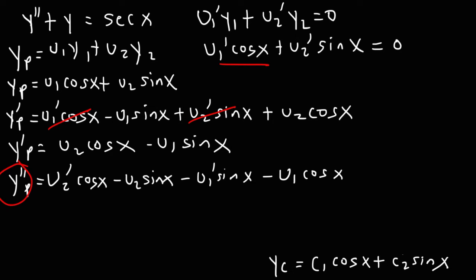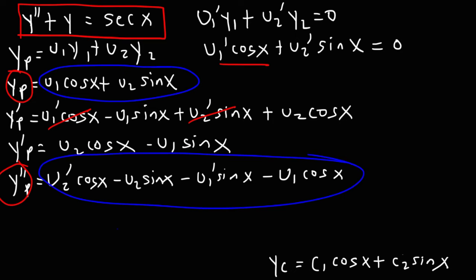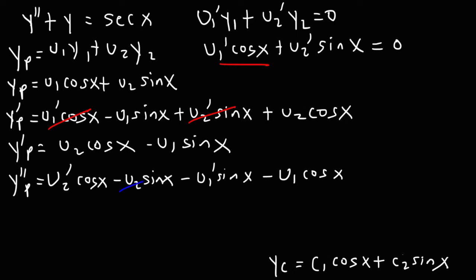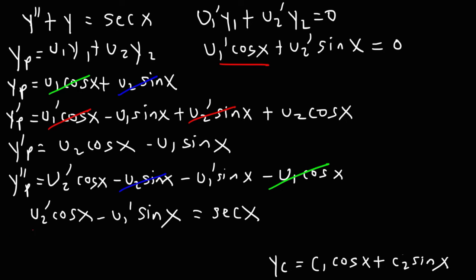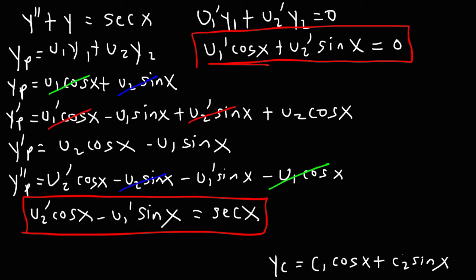Next we plug y double prime p and yp into the equation. When adding y double prime plus y, notice what cancels: negative u2 sine x and positive u2 sine x cancel, and u1 cosine x and negative u1 cosine x cancel. So y double prime plus y reduces to u2 prime cosine x minus u1 prime sine x, which equals secant x. We now have two equations with unknowns u1 prime and u2 prime, so we use a system of equations to solve.